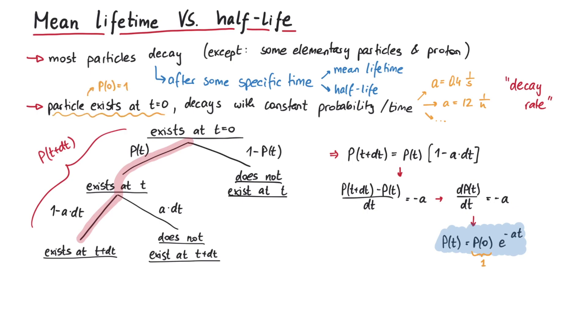Now that we have this exponential function, we can define a new variable tau as 1 over the decay rate. And we call it the mean lifetime of a particle such that the exponential function reads e to the minus t over tau.